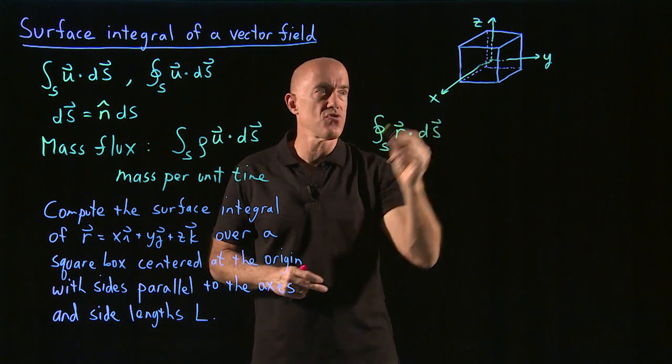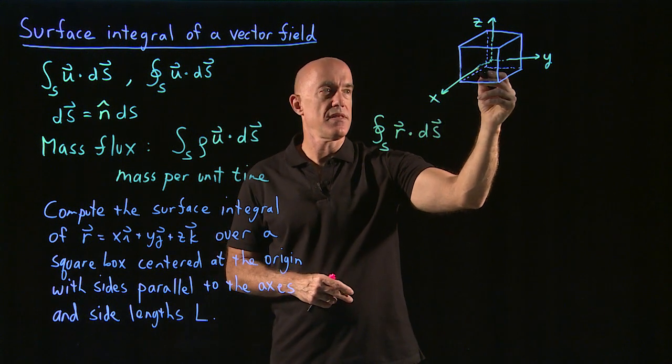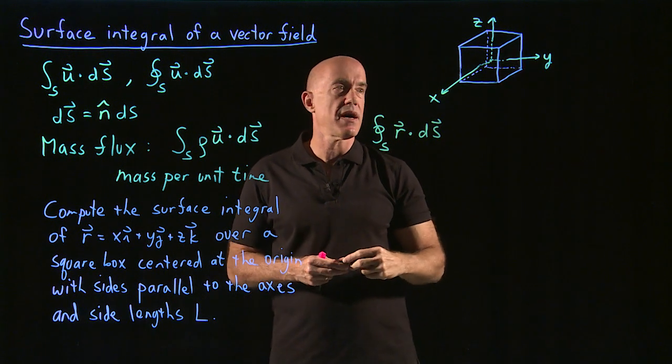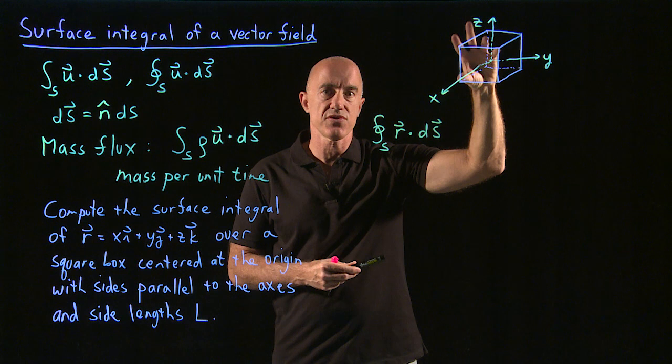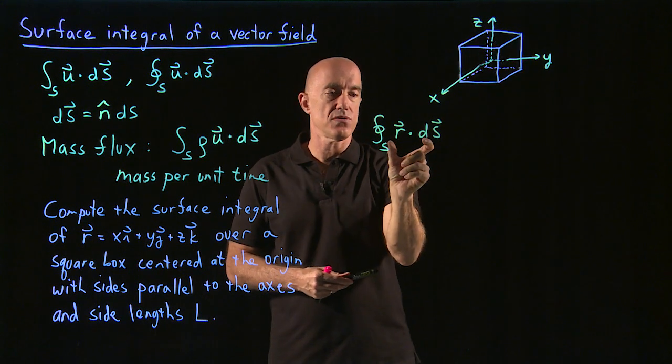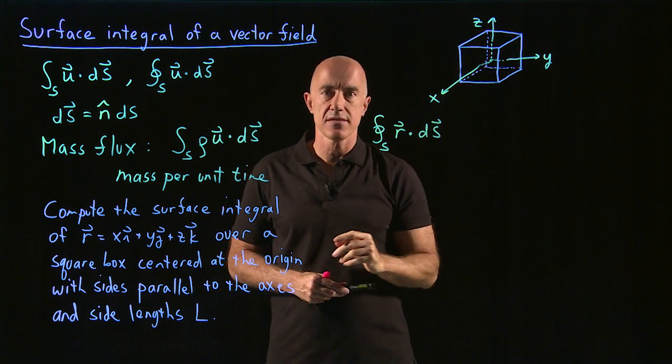So ds are the normal vectors on the six surfaces of this box. Right, this box has six sides. It's one surface, but it has six sides. So we have to compute r dot ds over the six sides.